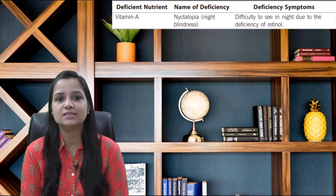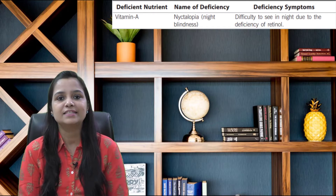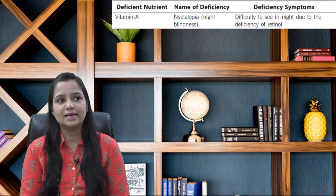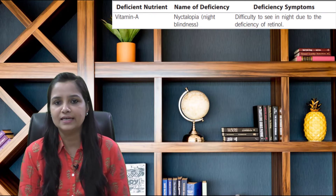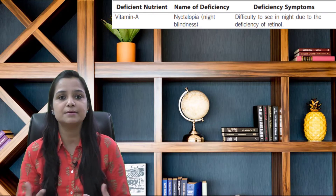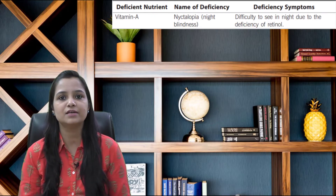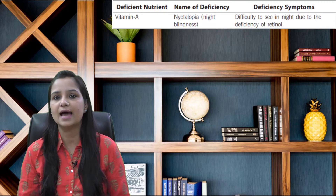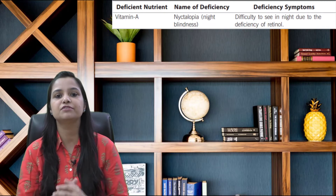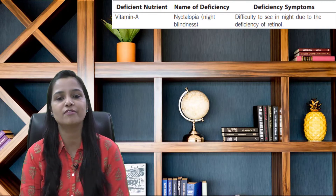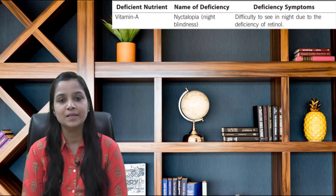The first one is vitamin A. Its deficiency causes nyctalopia, that is night blindness, and its symptoms are difficulty seeing at night due to the deficiency of retinol.